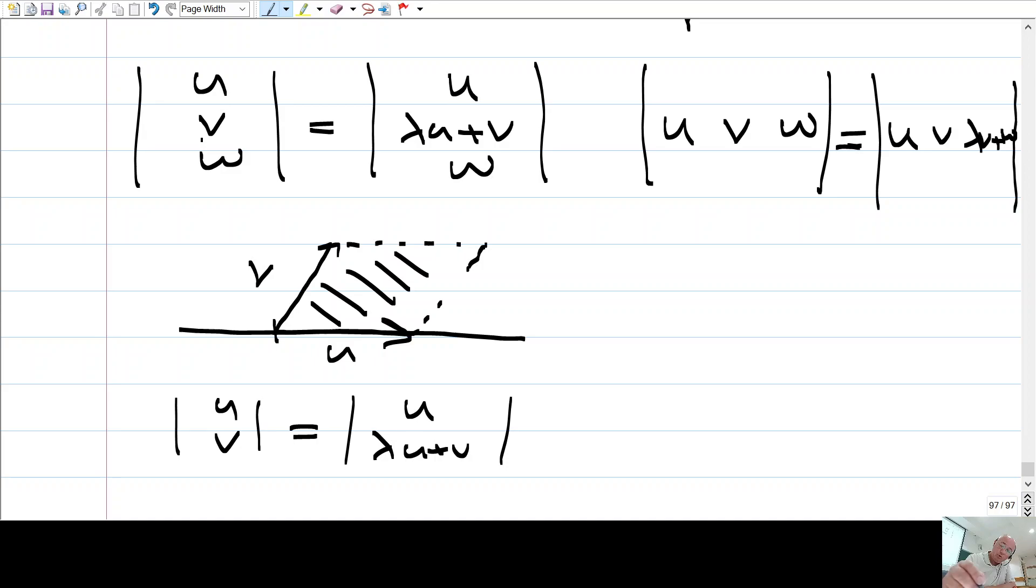U'nun bir katını lambda'ya ekliyorum. O zaman ne olur? U'nun lambda katı mesela şu olsun. Lambda U tamam mı? Bunu V'ye ekliyorum. Bunu V'ye eklemek ne demek? Bunu V'ye eklemek V vektörünün ucunu değil mi? Bu lambda U bunu V'ye ekliyorum. V'ye ekleyince bunu şunu elde edeceğim. Değil mi?